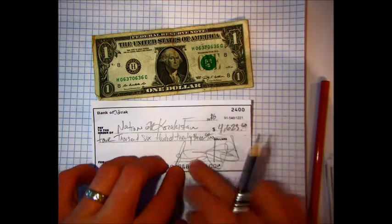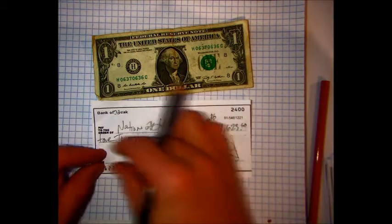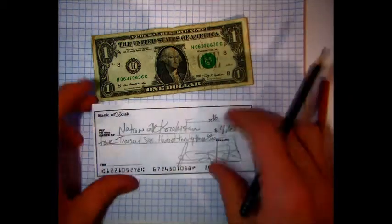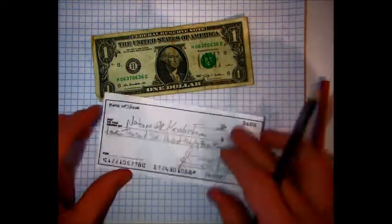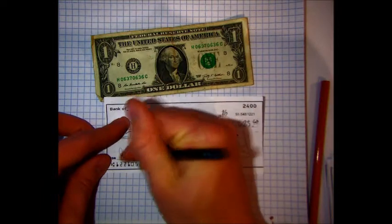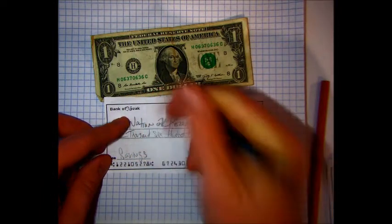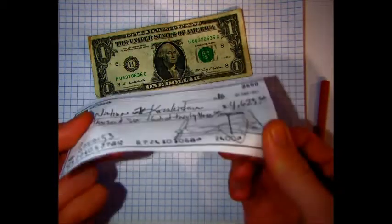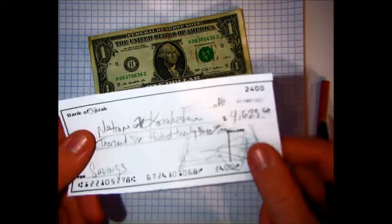And then finally, the for section over here is going to be kind of a note to yourself in case this check bounces or you forget what the heck it was for in the first place. Of course, this is going to go into our savings. Okay. So, we've saved this amount of money. We're going to deposit this at the Bank of Kozak, so you'll just give it to me and I'll give you some credit for it. But again, understand a little bit more about what a check actually is, right?